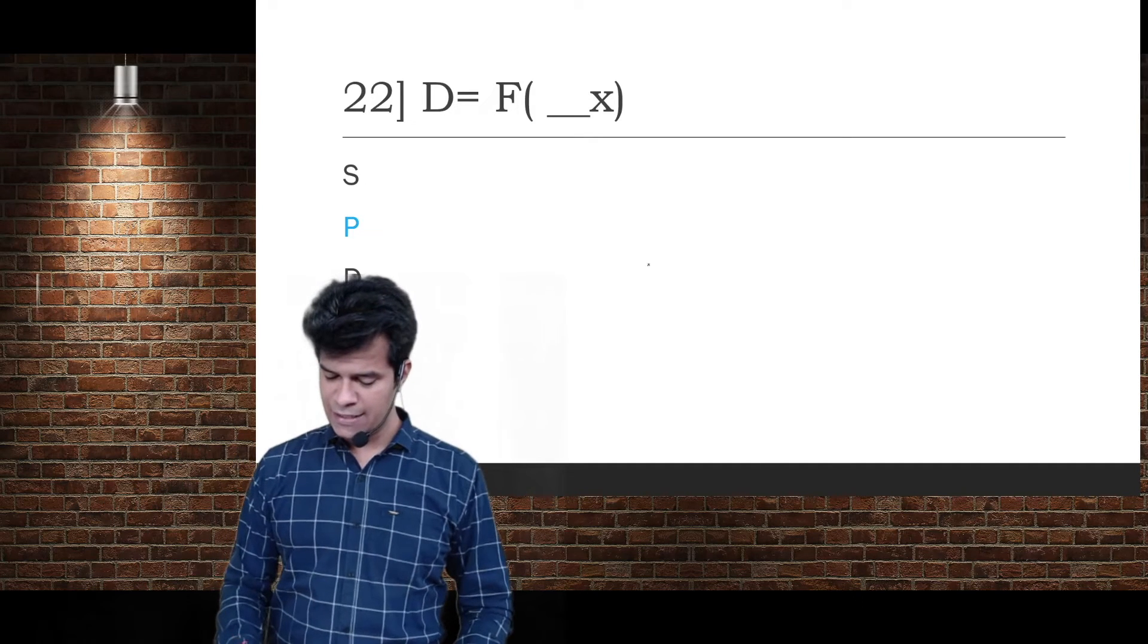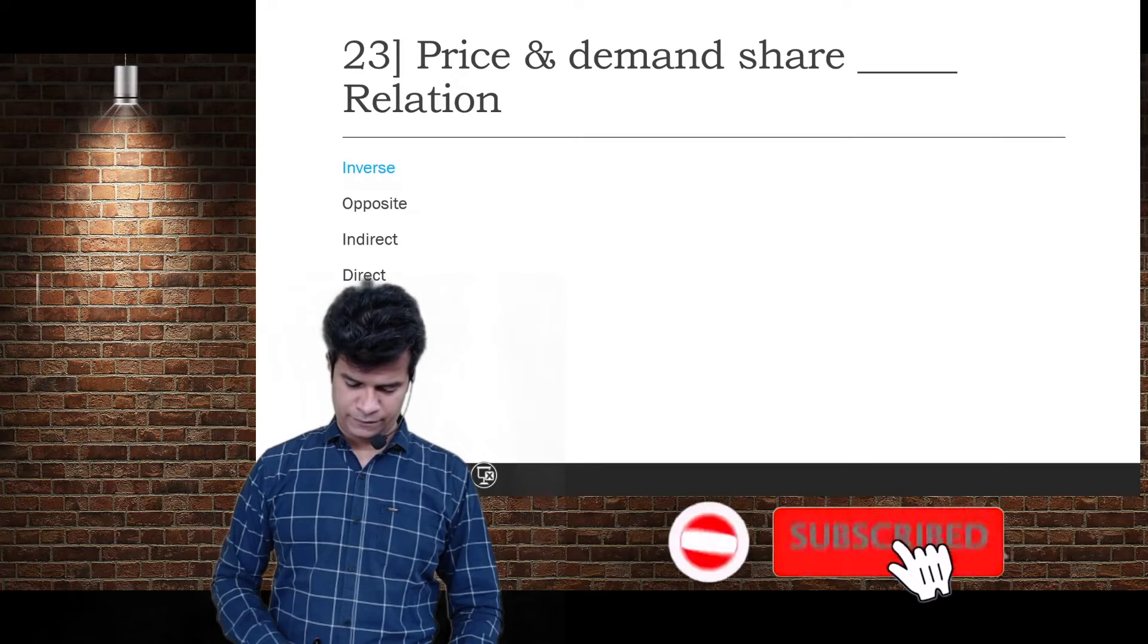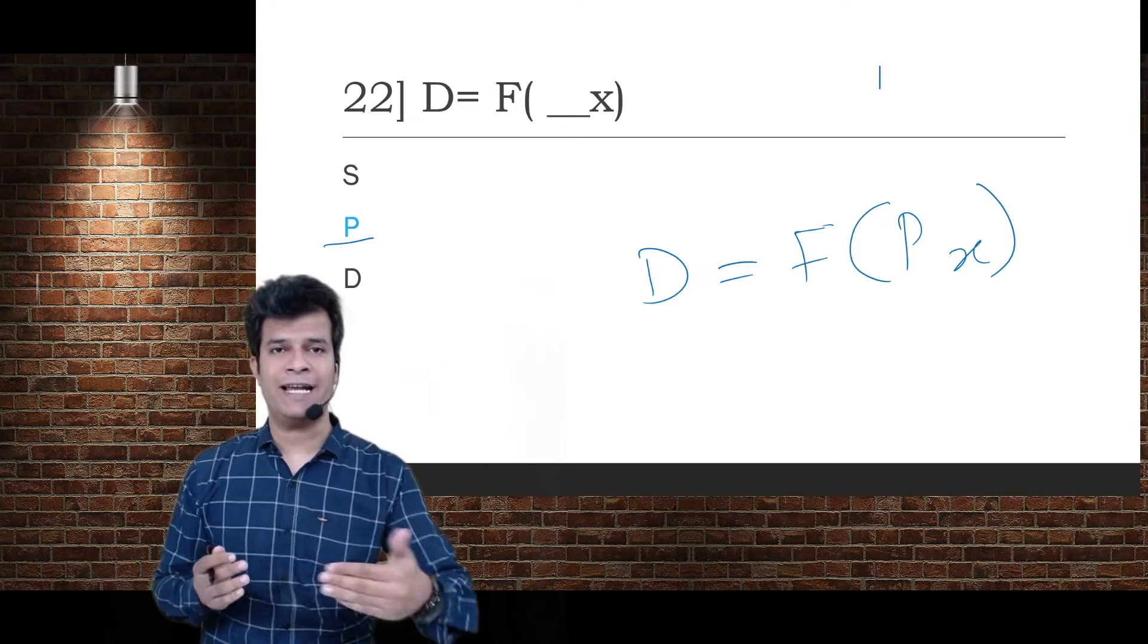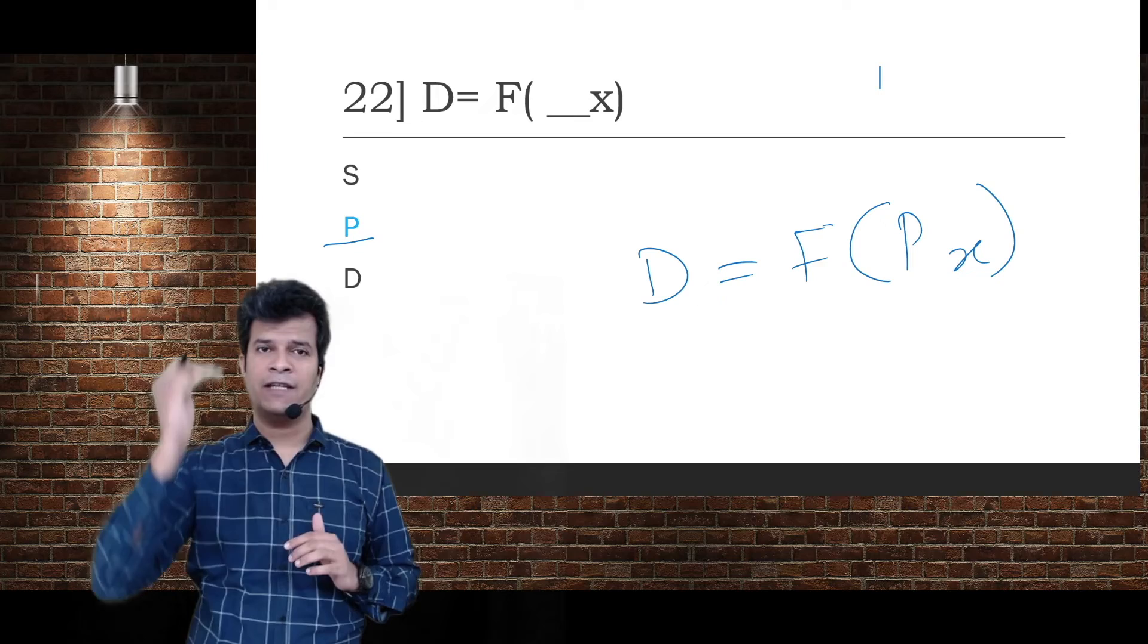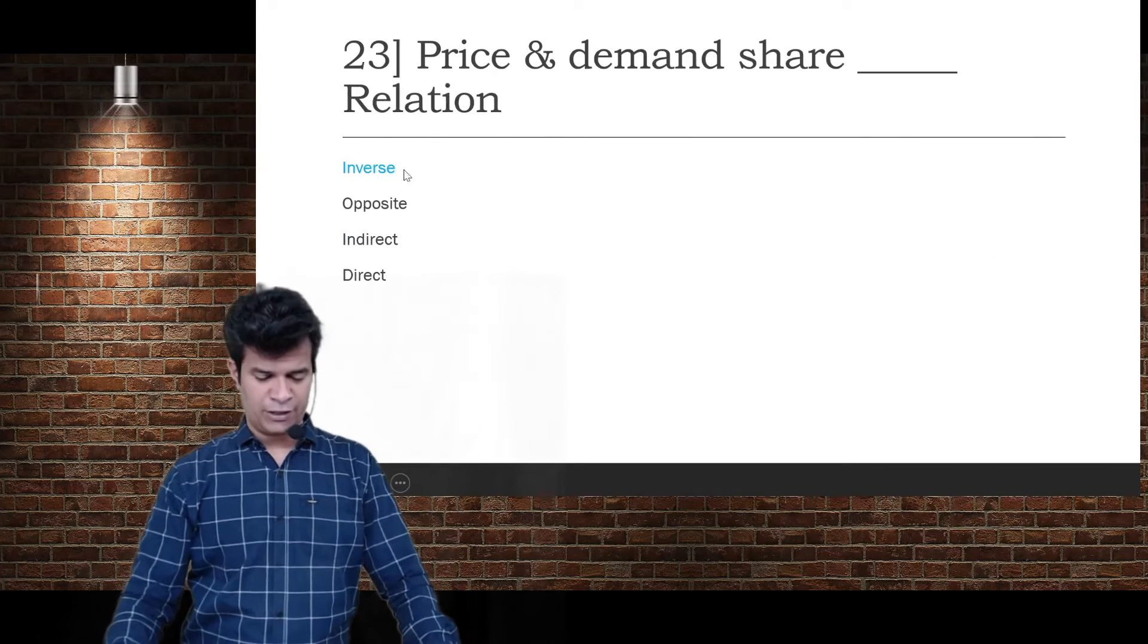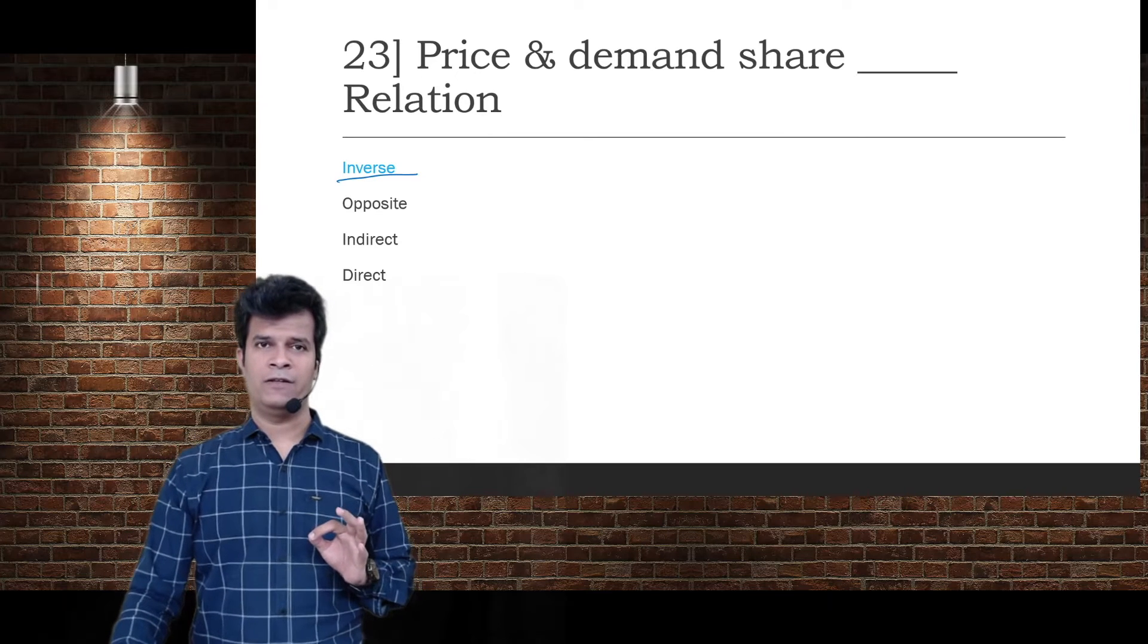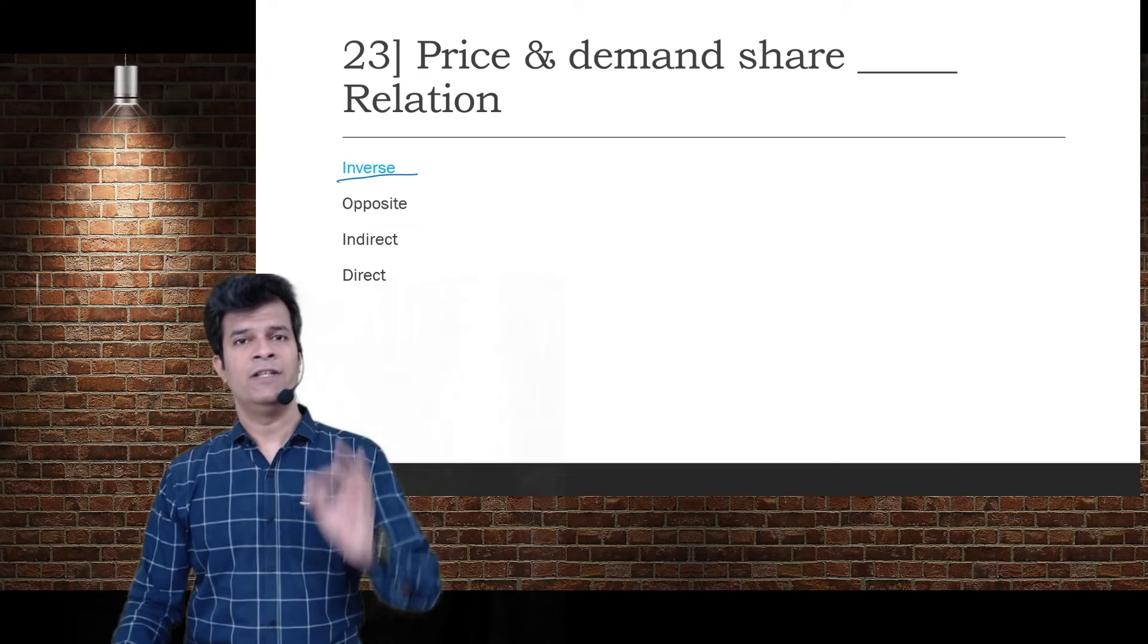This is a functional relationship we call: D is equal to function of price. D = f(P) means demand is a function of price. The simple meaning is demand is the reaction and price is the action. Price is the acting character and demand is the reacting character. Price and demand share an inverse relationship.